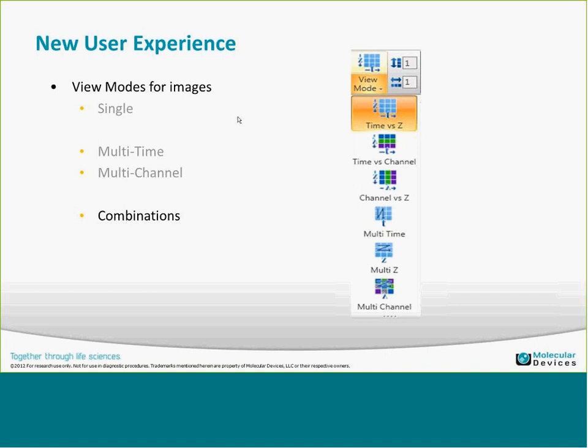The scripting feature allows you to create an automated process through IronPython using the script dialog within the application. You get context help — as you type a method, variable, or function, it shows up in a list so you can automatically select it to fill in the text. You can also copy text from an external editor.